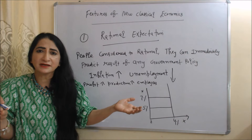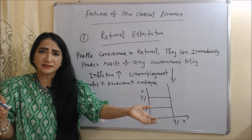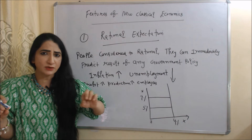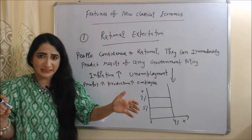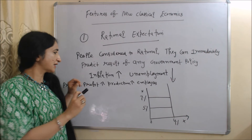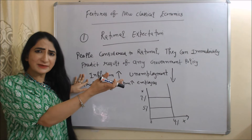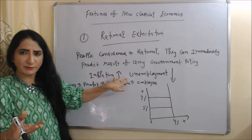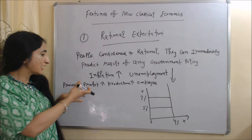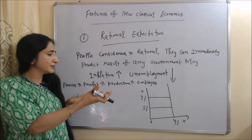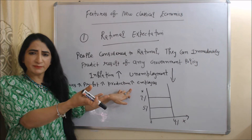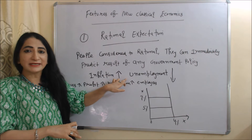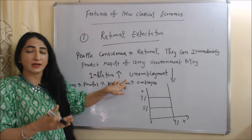Rational expectations assumes that people are very rational and can immediately predict the result of any government policy. That's why, under rational expectations, government policy does not work — it becomes ineffective. For example, suppose the government deliberately increases inflation so that unemployment can fall. Because of higher prices, producer profits increase, production increases, and producers hire more employees, reducing unemployment. This is how inflation can reduce the unemployment rate.